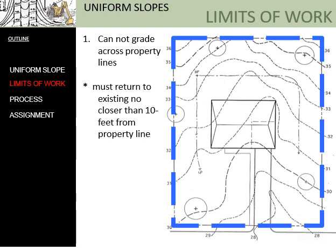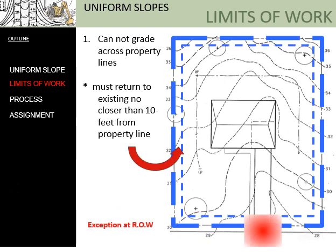Here we have a site plan not unlike the assignment you're about to undertake, with the property line highlighted in blue around the outside. You will offset in 10 feet on all of these property lines — this is the limit of work. You do not want to grade beyond that 10 feet, with the exception of the right-of-way, where you're allowed to grade past the property line to connect to the road if necessary. For the other three sides of the lot, you absolutely want to come in 10 feet, set a line, and not go past that limit of work.